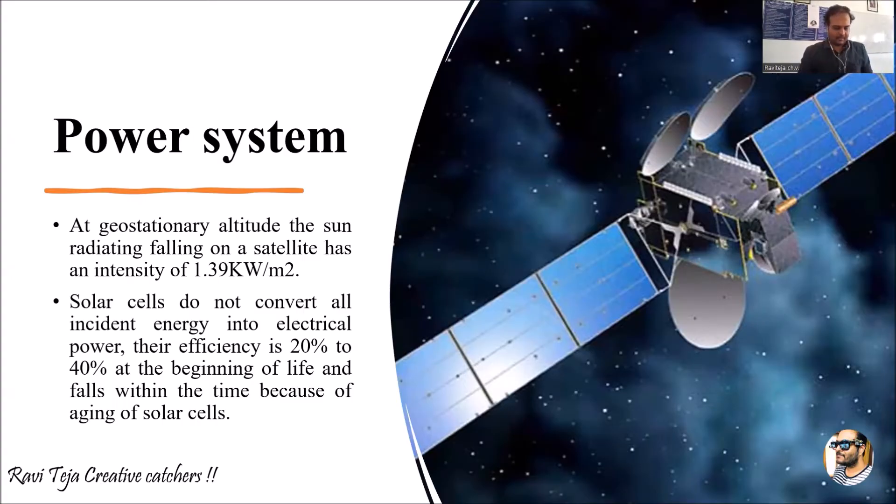But the drawback of solar panels is the solar cells do not convert all the incident energy of sunlight into electrical energy. The solar panel efficiency will be ranging from 20 percent. At the beginning of life, at most it can give only up to 40 percent of the incident rays. Suppose 100 percent of pure energy sun rays are falling on the solar panel.